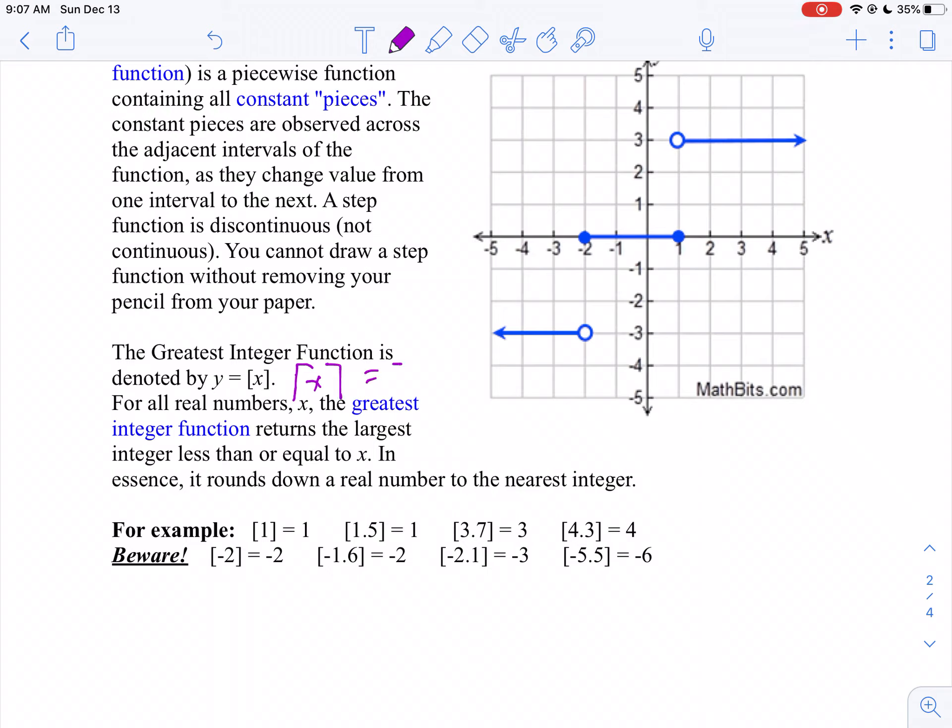Or sometimes you'll see it like two bars. That's the greatest integer function. It's the biggest number that's less than or equal to, the biggest integer that's less than or equal to your number.